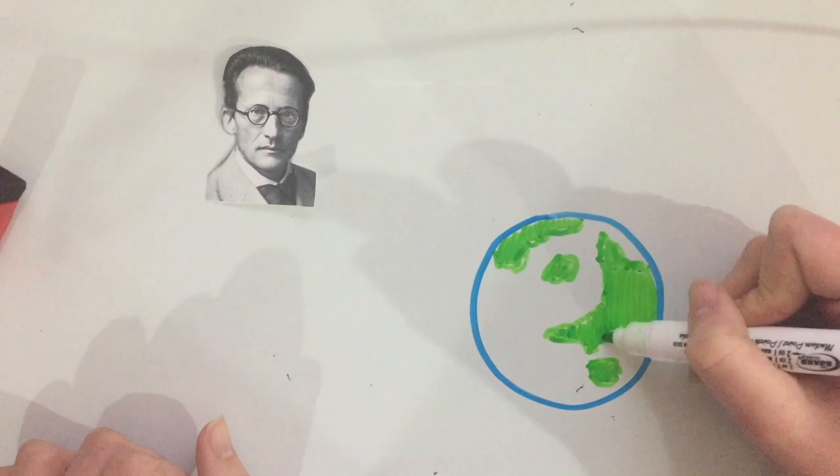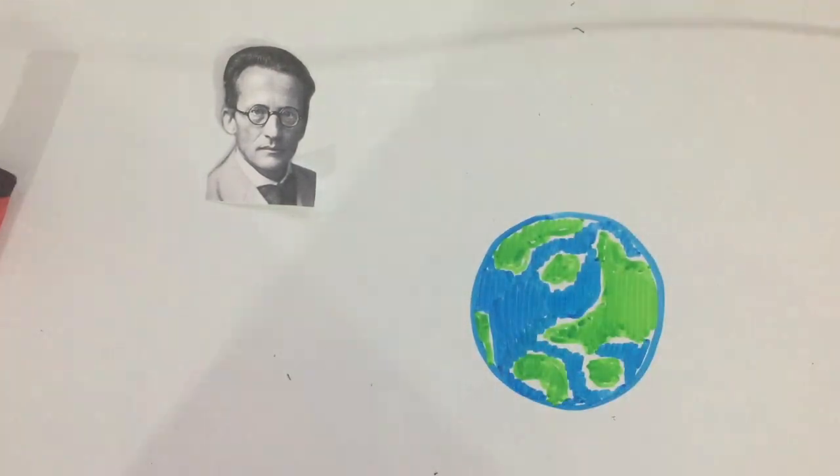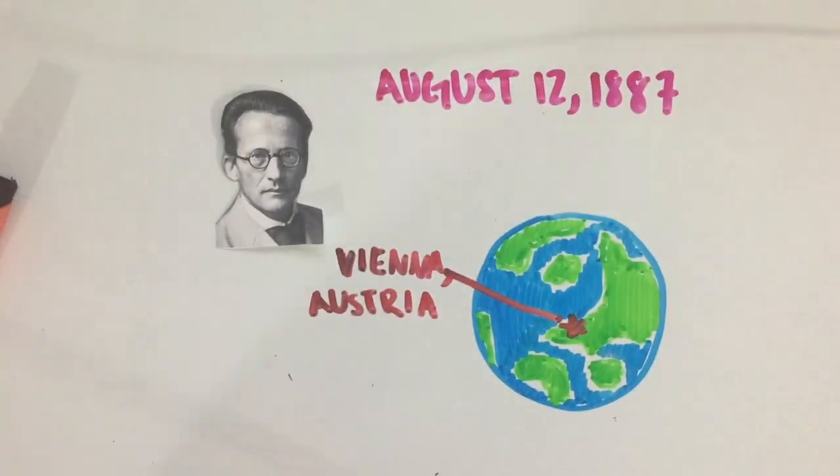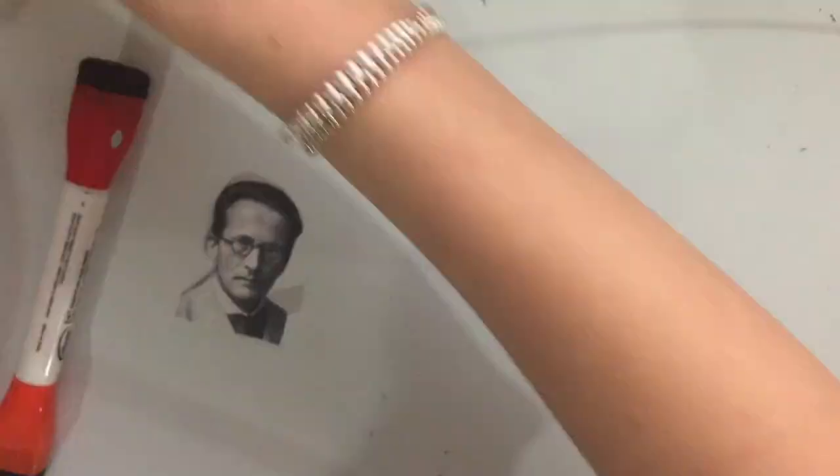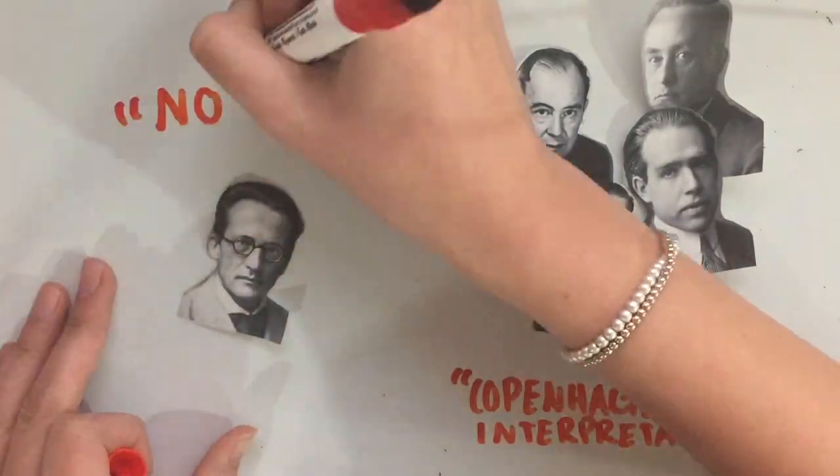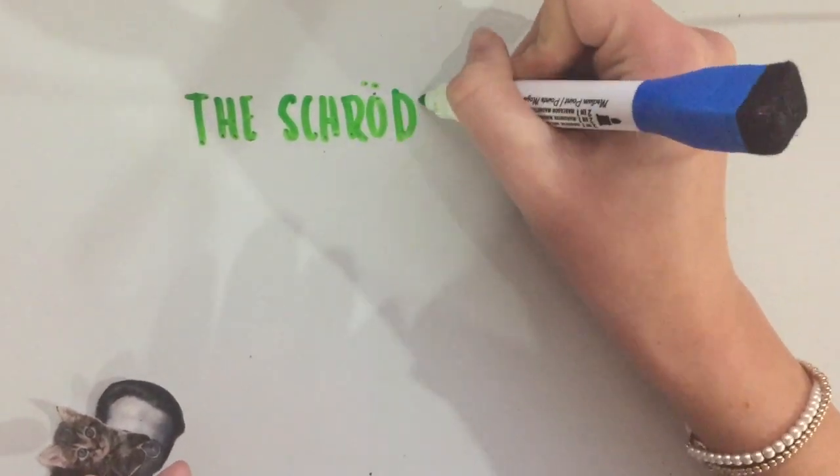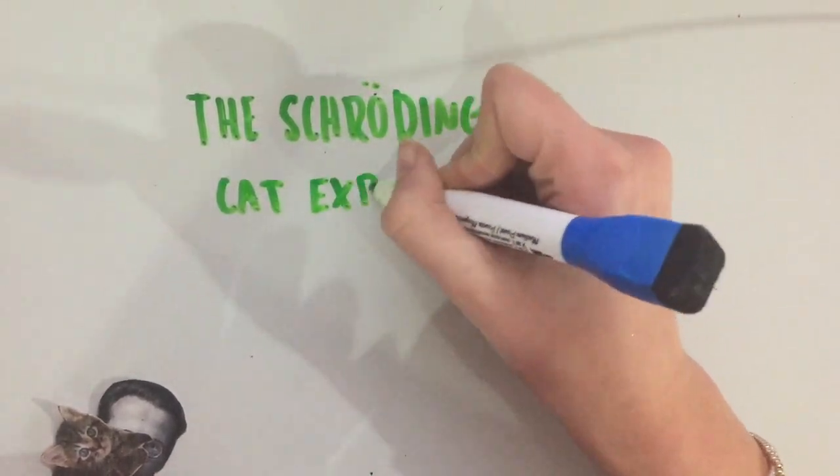Erwin Schrödinger, born in Vienna, Austria on August 12, 1887, didn't actually contribute to the Copenhagen Interpretation at all. In fact, he disagreed with it. To express what he thought, he created what we now know as the Schrödinger's Cat Experiment.